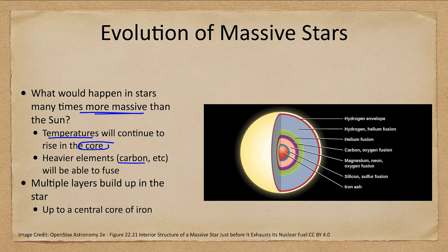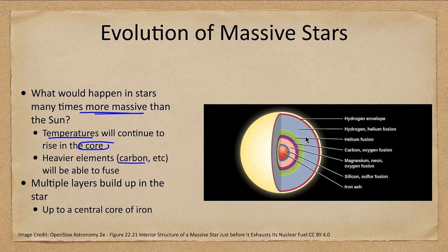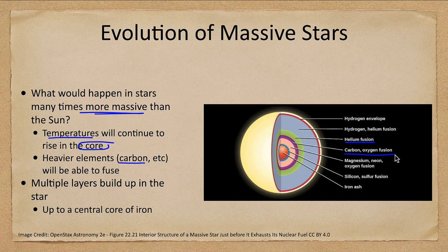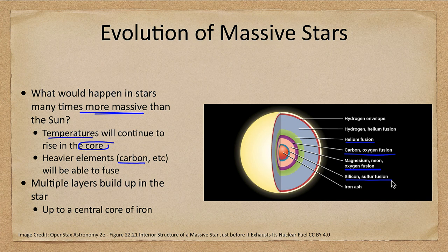We looked at an image like this for stars like our Sun but here we have even more layers from hydrogen envelope and helium fusion going on in the green. We have carbon and oxygen fusion going on in the purple section, magnesium, neon and oxygen in the pink, silicon and sulfur in the darker blue and then iron ash in the central core.